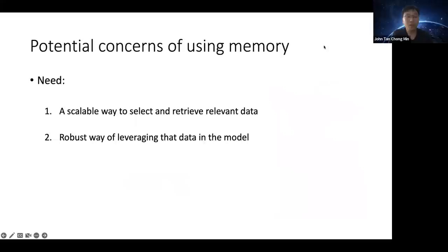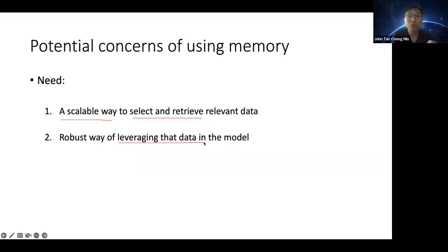What are the concerns if we use memory for this kind of retrieval? There are two main concerns. First, we need a scalable way to select and retrieve data — if we don't manage to scale, when your memory has billions or trillions of entries, you'll have a hard time extracting memory fast enough for real-time inference. Second, after collecting retrieved data from memory, how do you use it robustly without affecting your performance? Sometimes the retrieved data might be bad, so we need a robust way of doing selection.